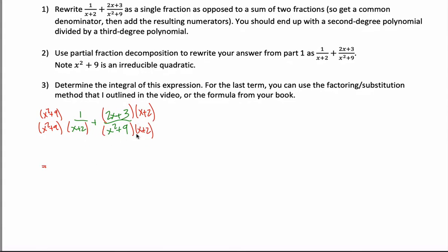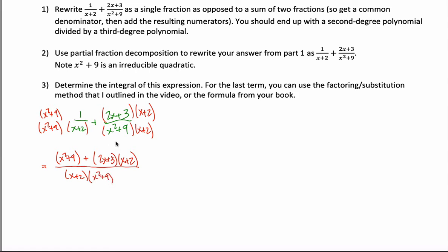After a little bit of algebra, I have an expression with a common denominator that can be written as a second-degree polynomial divided by a third-degree polynomial. Since both fractions share the same denominator, I can just add up the numerators: x squared plus nine, plus two x plus three times x plus two — all divided by x plus two times x squared plus nine.